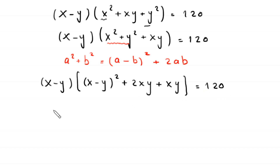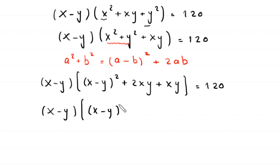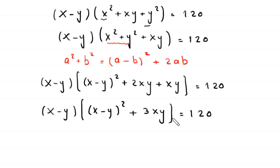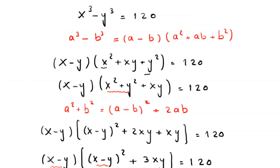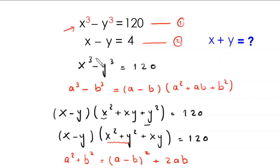So the expression becomes x minus y times the quantity x minus y whole squared plus 2xy plus xy, which simplifies to x minus y times x minus y whole squared plus 3xy is equal to 120. Now we replace x minus y with the value 4 from equation number 2.